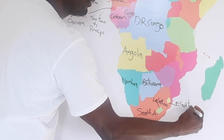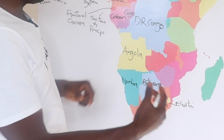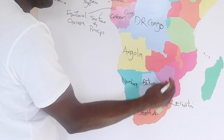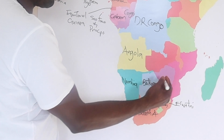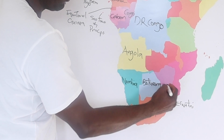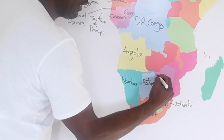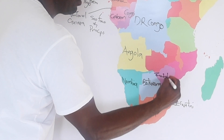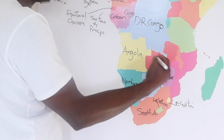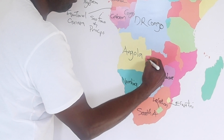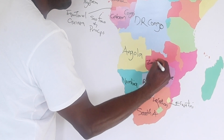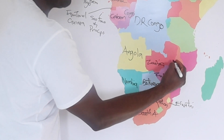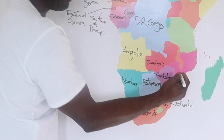Eswatini — that's what they rebranded to. And we have just right here Zimbabwe, who also shares a border with South Africa. And just above Zimbabwe we have Zambia. And here we have Malawi.